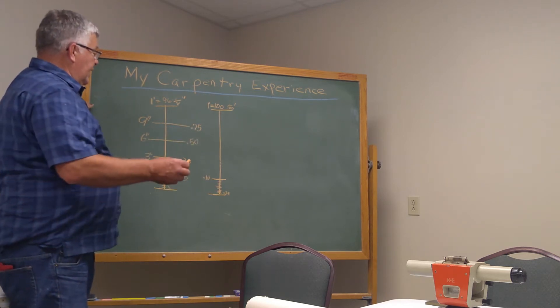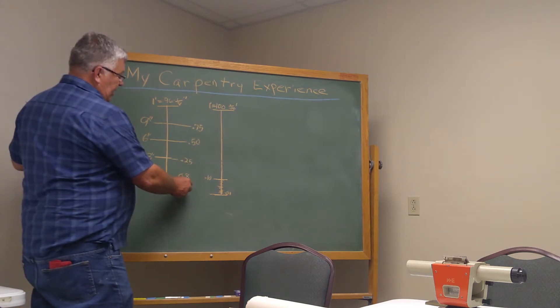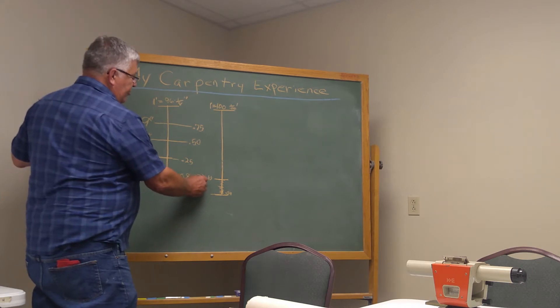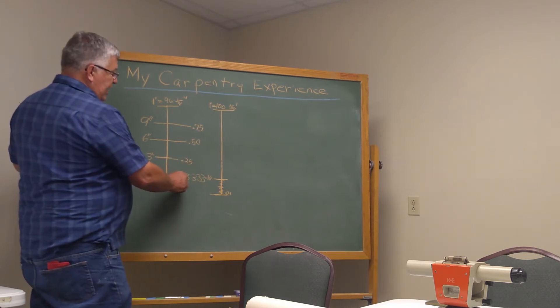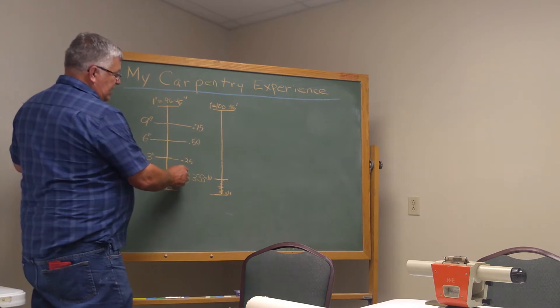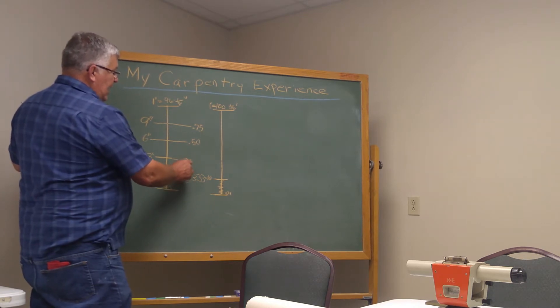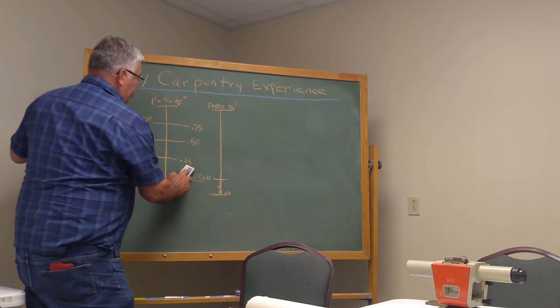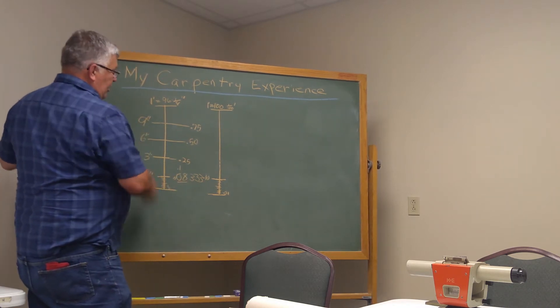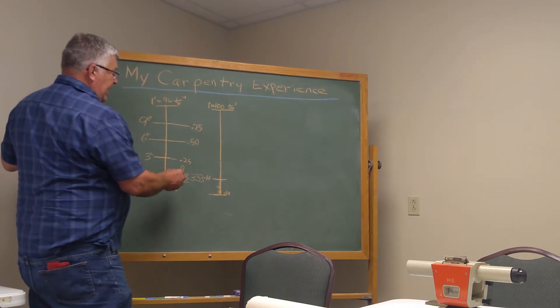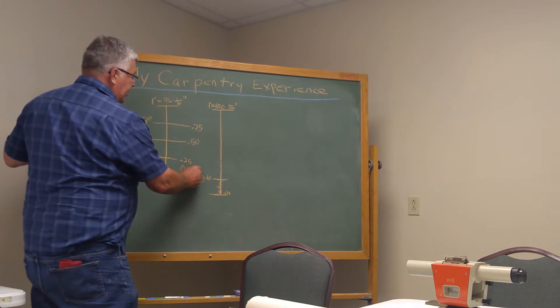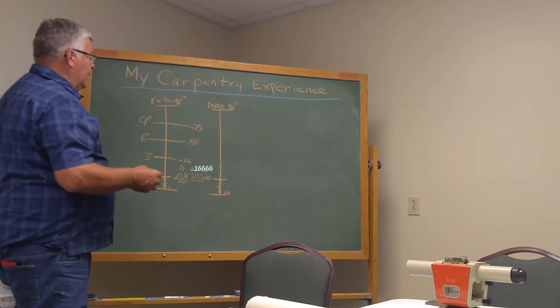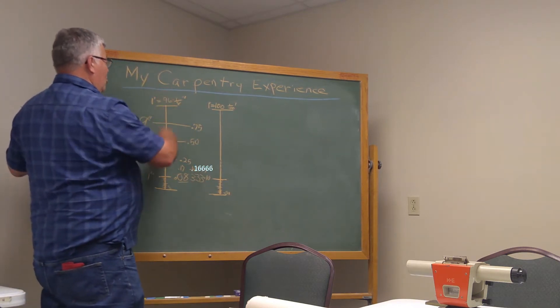So, instead of adding another point zero eight and make it point one six, I would subtract point zero eight from the point two five, which would make it point one seven. It is actually point one six seven. And therefore, you could go through the whole foot.